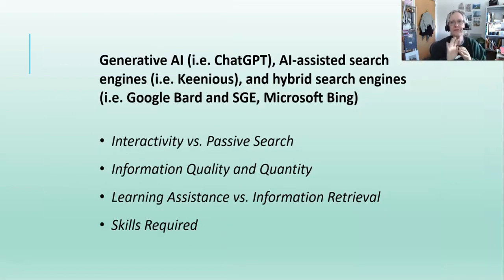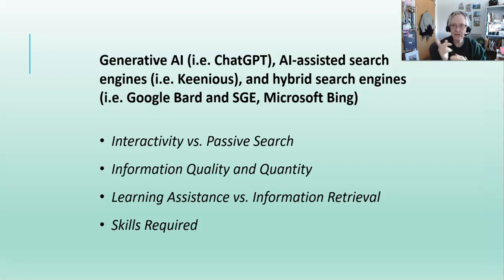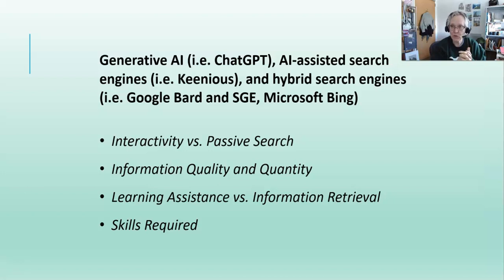We'll look at four specific areas where there are differences between generative AI, AI-assisted search engines, and hybrid search engines: the difference between interactivity and passive search, the quality and quantity of information you get, the purpose of the tool — assistance in learning versus retrieval of information — and lastly, the skills required to deal with an AI search.